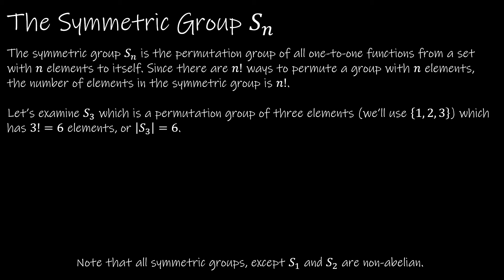The other big group we're going to look at is the symmetric group, which will continue to appear through our studies. The symmetric group is a permutation group of all one-to-one functions from a set with n elements to itself. There are n! ways to permutate a set with n elements, so the number of elements in the symmetric group is n factorial. We're going to look at S3, a permutation group on the elements {1, 2, 3}. The group itself has 3! = 6 elements, so the order of S3 is six.